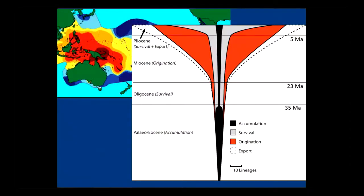We've done this for a whole range of groups, and we know that in Australia we're just south of this biodiversity hotspot. There are lots of species up there — the brighter red it is, the more species you find there. What's on the right-hand side is a summary of what that hotspot has looked like through time, suggesting that 35 million years ago or more, most of the species were coming from somewhere else.